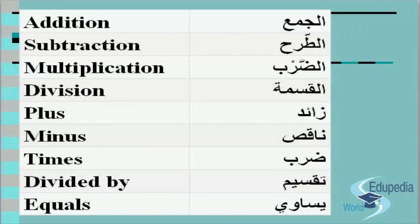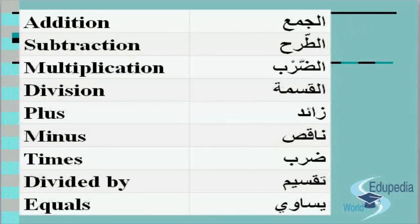Now let's see how to say the signs. Plus: زائد. Minus: ناقص. Times: ضرب. Divided by: تقسيم. Equal: يساوي. So let's say them once again — Addition: الجمع, Subtraction: الطرح, Multiplication: الضرب, Division: القسمة, Plus: زائد, Minus: ناقص, Times: ضرب, Divided by: تقسيم, Equal: يساوي.